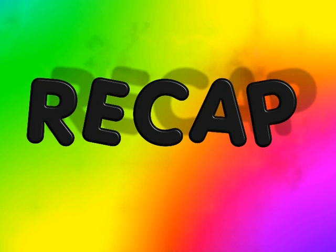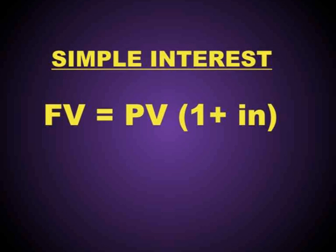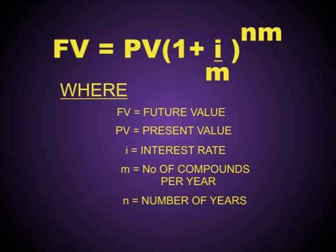Let us do a quick recap of the formulas covered so far. For Simple Interest: Future Value equals Present Value times (1 plus interest times number of years). For Compound Interest: Future Value equals Present Value times (1 plus interest divided by number of compounds per year) to the power of number of years multiplied by number of compounds per year.